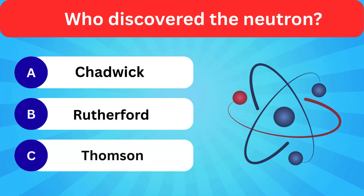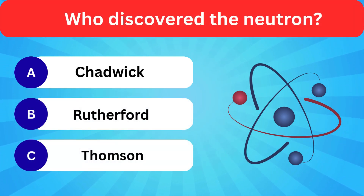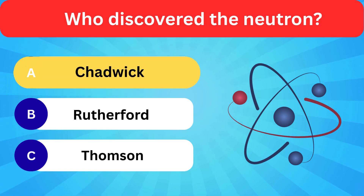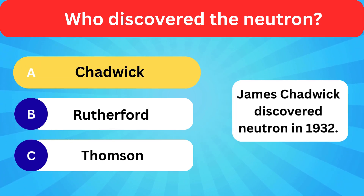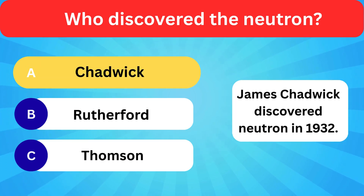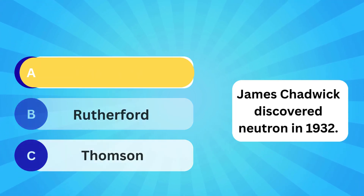Who discovered the neutron? Options: Chadwick, Rutherford, Thompson. Correct answer is Chadwick. James Chadwick discovered the neutron in 1932.